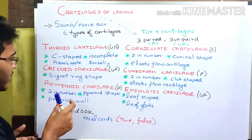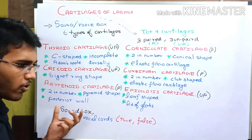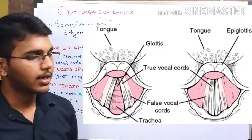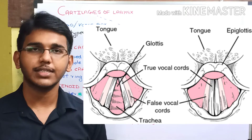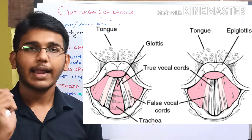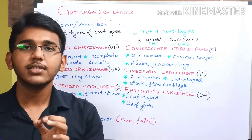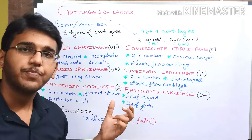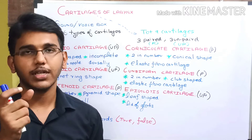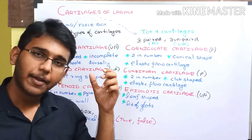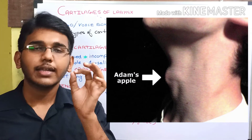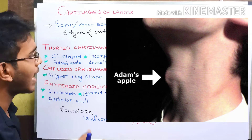What is Adam's apple? A sound box consists of vocal cords. There are 2 types of vocal cords in the larynx: the true vocal cords and the false vocal cords. During exhalation, air comes out through the larynx and vibrates the vocal cords, producing sound — our speaking ability. In males, the vocal cords become thick due to androgens such as testosterone, making the thyroid cartilage more prominent and projecting outward. That prominent thyroid cartilage in the male body is called the Adam's apple.